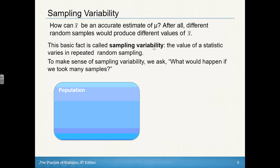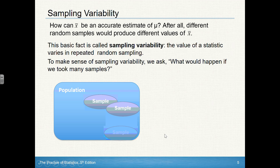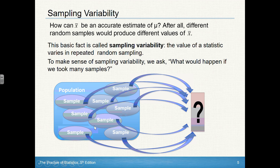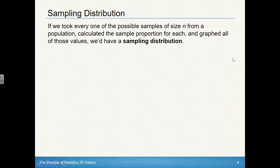When we talk about sampling variability, we understand that when we take different samples we're going to get different results — there's going to be some variability within that sample. But what we want to think about is: what if we could take every possible sample? If we could take as many possible samples of the same size as we could, and then we computed the mean and the standard deviation of all those samples, that's what we'd be talking about when we refer to the sampling distribution.